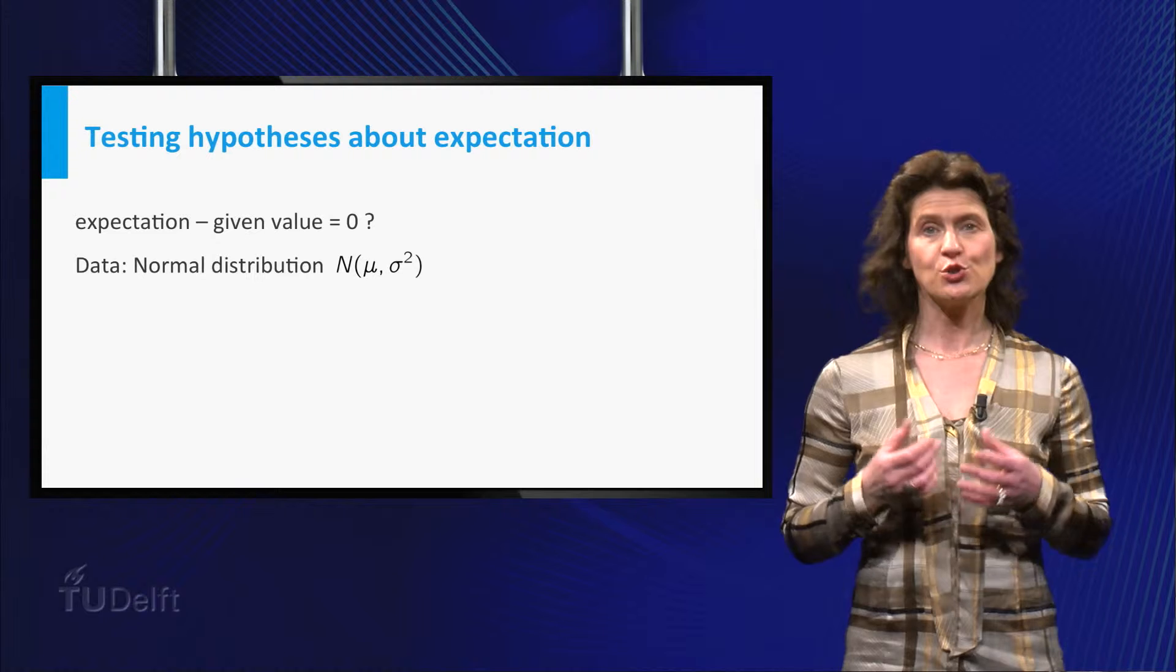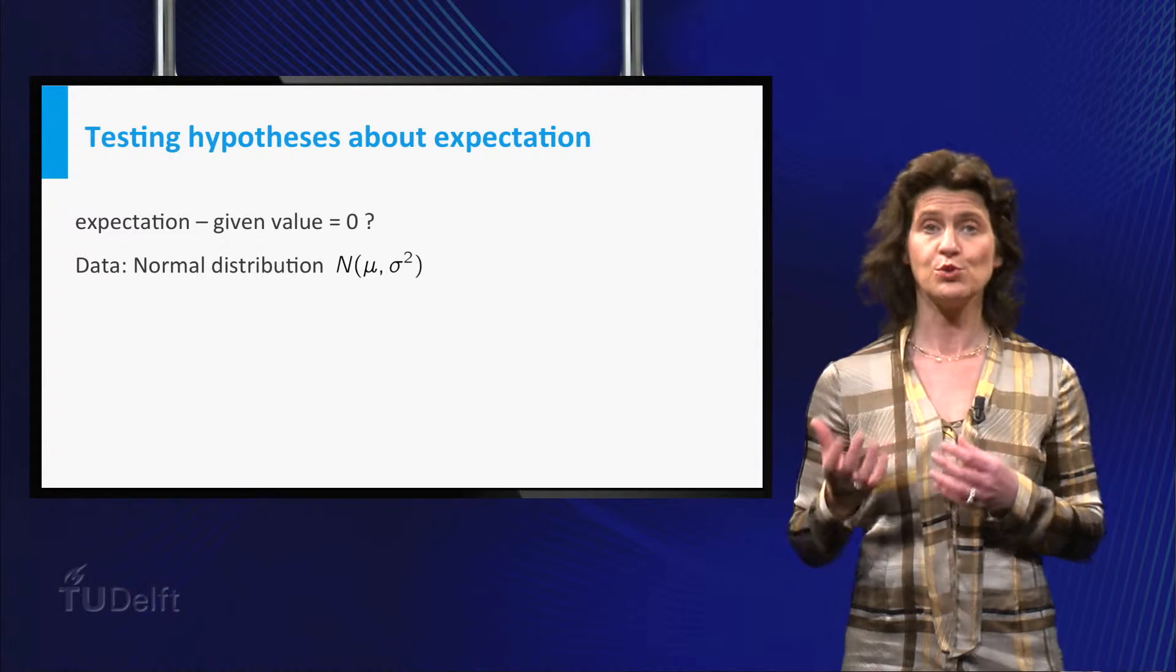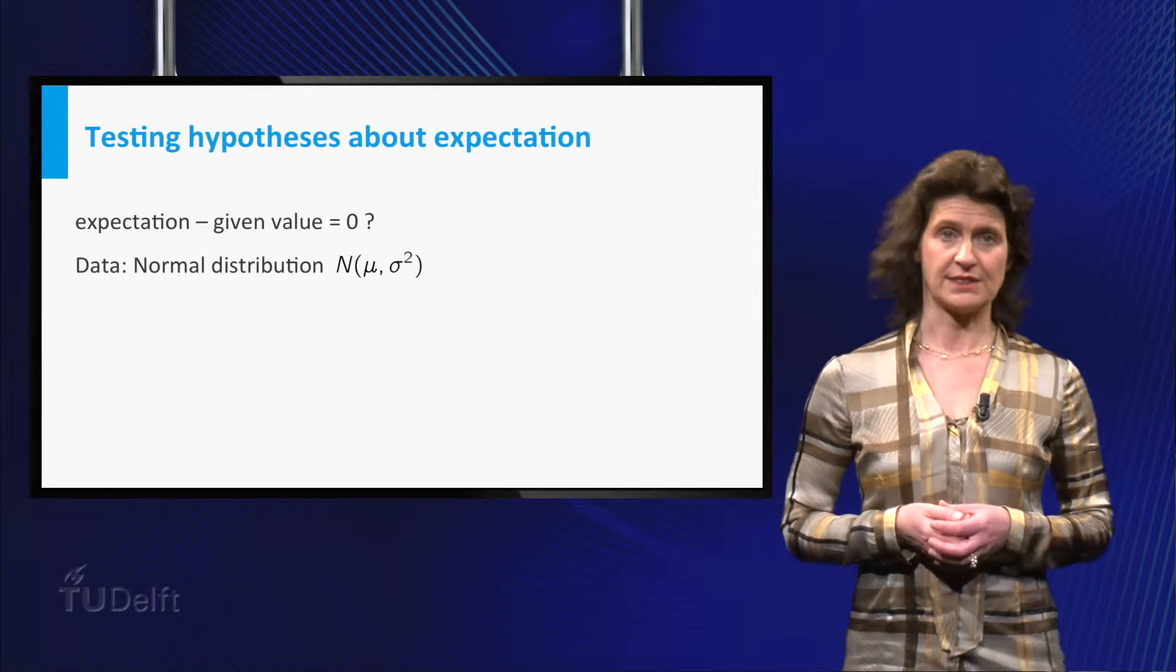In this video, we assume the data are from a normal distribution with both parameters mu and sigma squared unknown. In class we will generalize this.